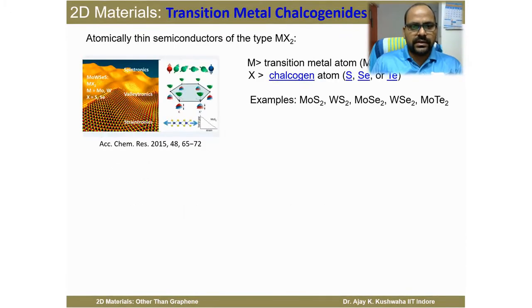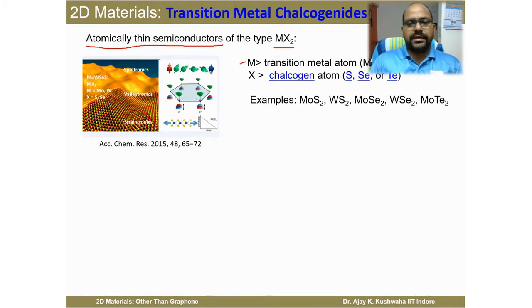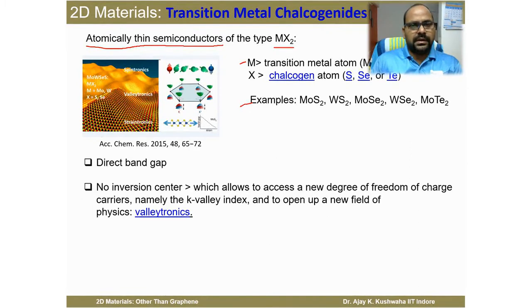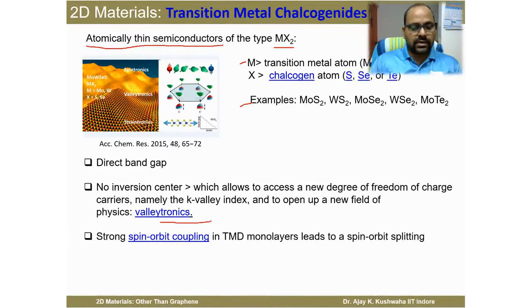Transition metal chalcogenides have a formula MX₂. They are also known as atomically thin semiconductors. In this formula, M is a transition metal atom such as Mo or W, and X is a chalcogen atom — sulfur, selenium, or tellurium. Examples include MoS₂, WS₂, MoSe₂, WSe₂, and MoTe₂. This material has a direct band gap, no inversion symmetry at the K point, giving rise to unique electronic properties known as valleytronics. They also possess very strong spin-orbit coupling, making them suitable for spintronic behavior.